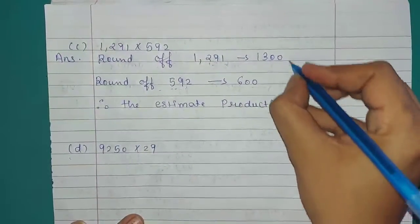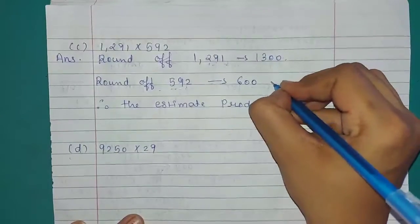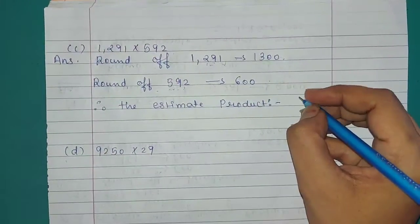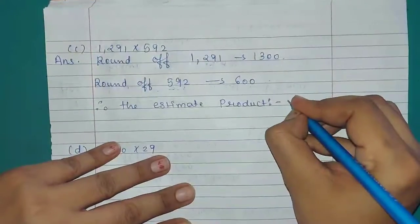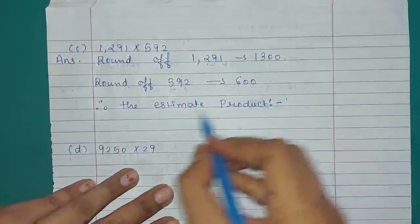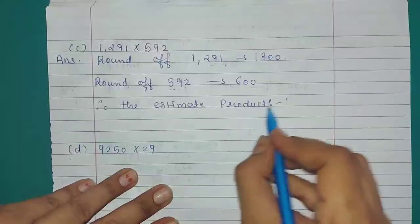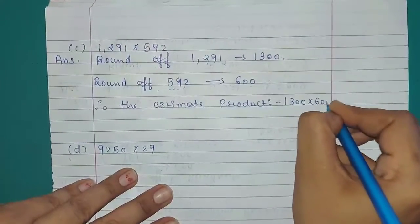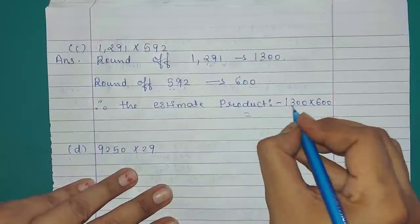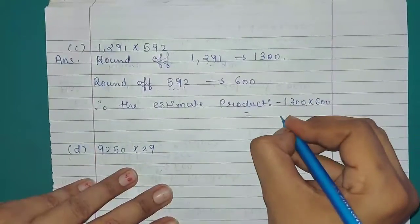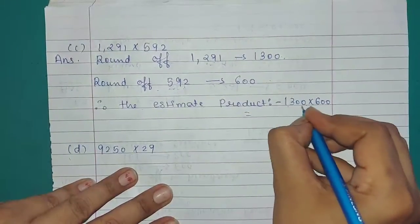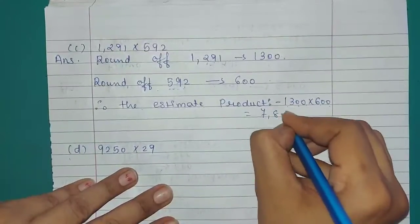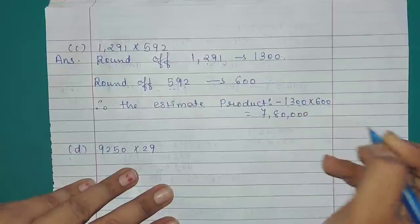Therefore, the estimated product equals 1,300 multiplied by 600. Multiplying 13 by 6 gives 78, and we add 4 zeros. So the answer is 7,80,000.